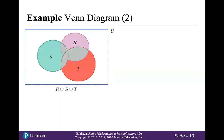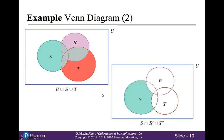Here you see the set R union S union T — these would be all the points that are inside at least one of the circles. Any region that is shaded belongs to R union S union T. And then finally, the region in green represents S intersect R complement intersect T complement. These are all points that belong to S, that do not belong to R, and do not belong to T. Notice how the green region is inside the circle for S, but is outside both of the circles for R and T.